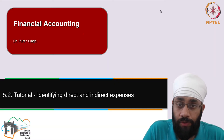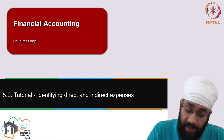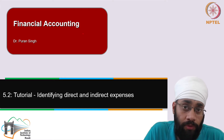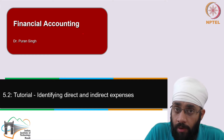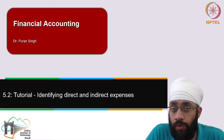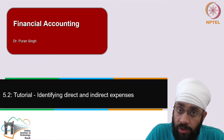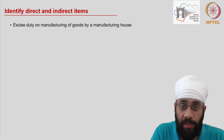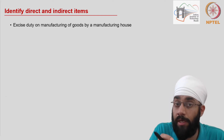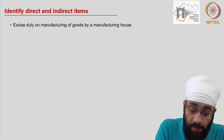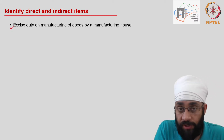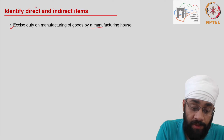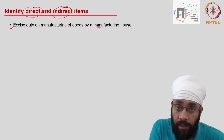This is a tutorial on direct and indirect expenses. In the last video, we looked at the format for the profit and loss account. In that account, there is a section for direct expenses and another section for indirect expenses. It is important to have a clear understanding of what direct and indirect expenses are. On the slide, there is a transaction with the name of an expense and some explanation, and we have to identify if the expense is direct or indirect in nature.